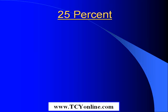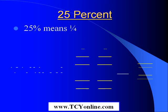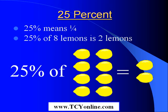For example, twenty-five percent would mean one-fourth. For example, twenty-five percent of eight lemons would be two lemons, as shown.